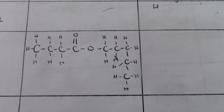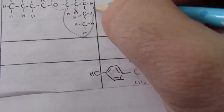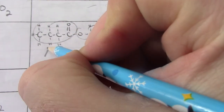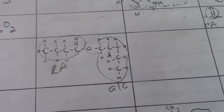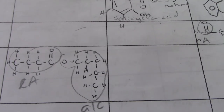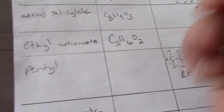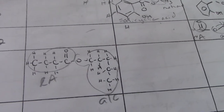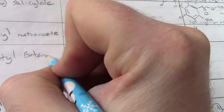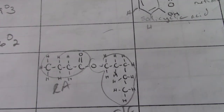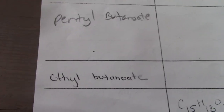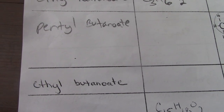This next one gives you the complete structural diagram. The alcohol side has 5 carbons — so that's pentyl. The carboxylic acid side has 4 carbons — so that's pentyl butanoate. You can count up the carbons, hydrogens, and oxygens to get the chemical formula. For ethyl butanoate, the alcohol side is ethanol with 2 carbons, and the carboxylic acid side is butanoic acid with 4 carbons. You can fill that one in — we're pretty clear on what we need to do here.